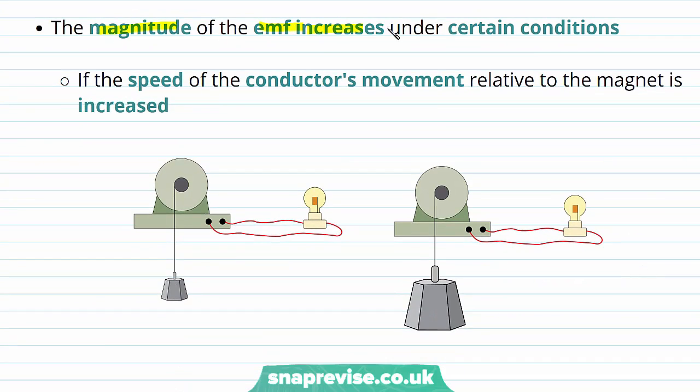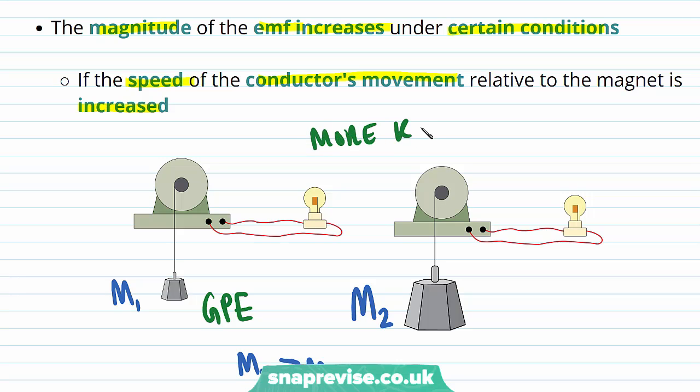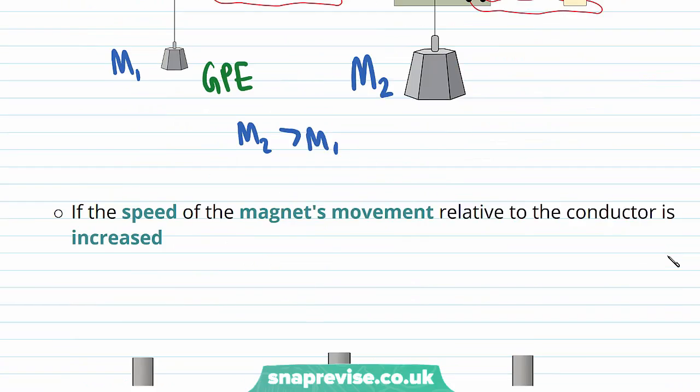The magnitude of the EMF increases under certain conditions. First of all, if the speed of the conductor's movement relative to the magnet is increased. For example, in the case of the weight turning a coil, if we have a larger mass, the coil is going to move faster. Because the gravitational potential energy will convert into more kinetic energy in the case of the larger weight. Therefore, there will be a higher EMF induced in this circuit.